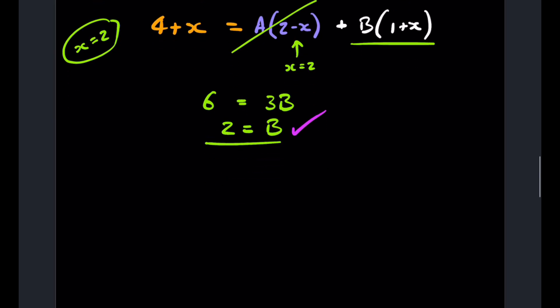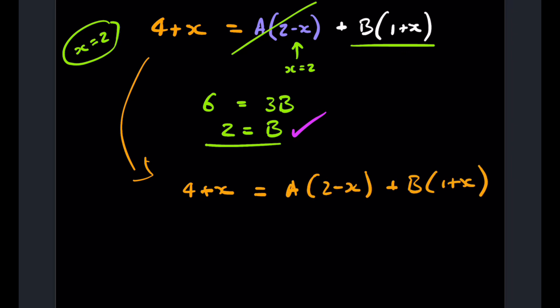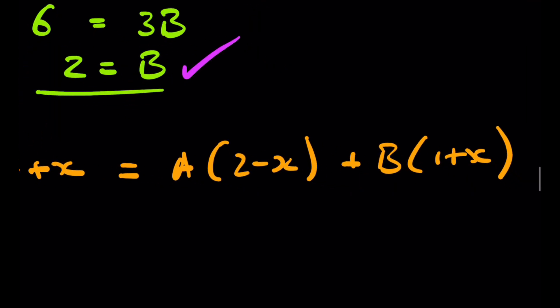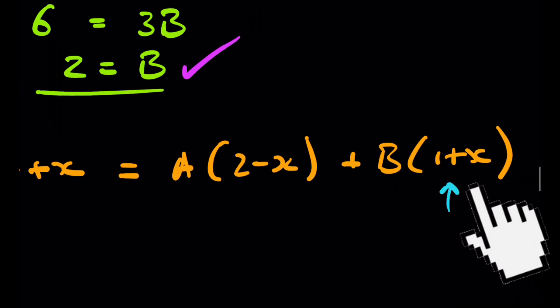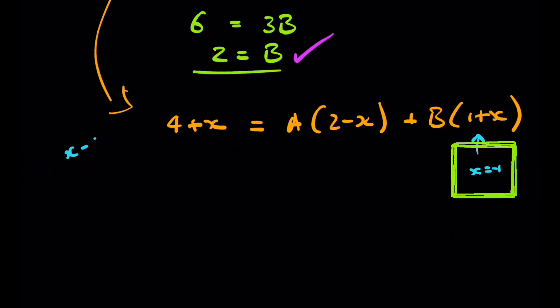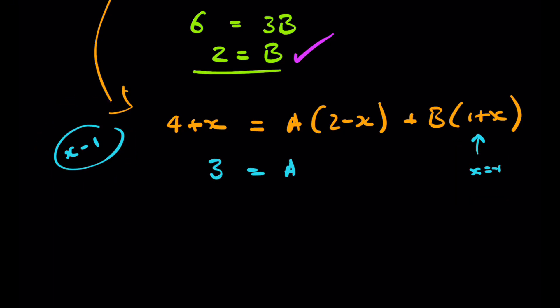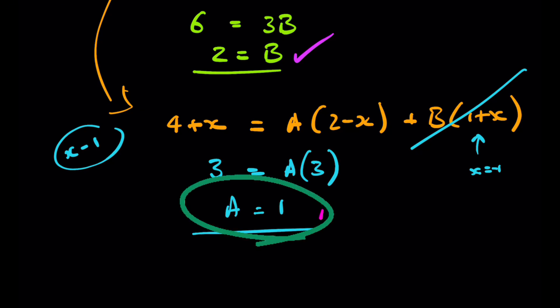That means B=2. Now we rewrite the expression and substitute a different value — the one that makes the other bracket zero, which is x=−1. Substituting x=−1 across the whole equation, we get 3 = A(2−(−1)) = 3A, and the B term disappears. Therefore A=1.